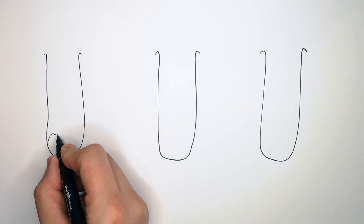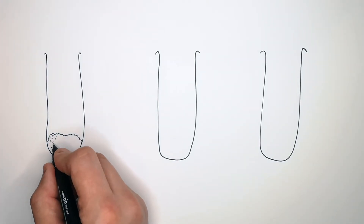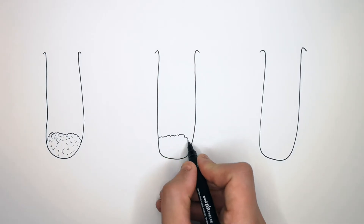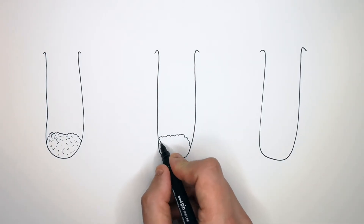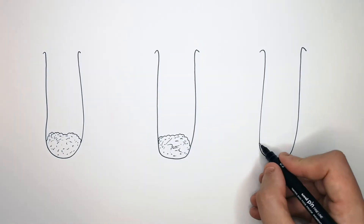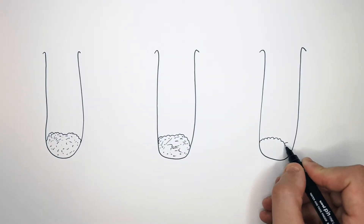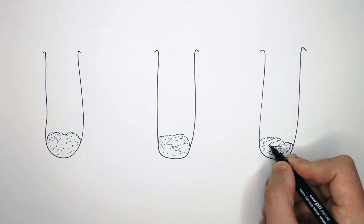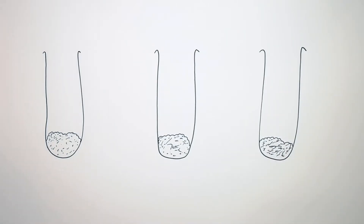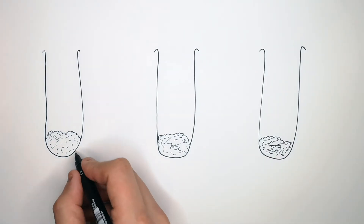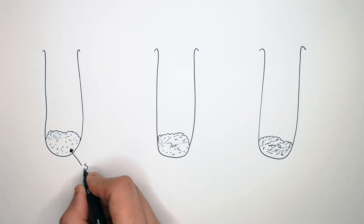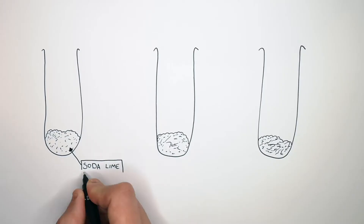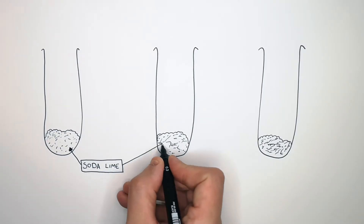You firstly place the same volume of soda lime at the bottom of each test tube. Soda lime absorbs carbon dioxide. Remember, the same volume of soda lime is placed at the bottom of each test tube.